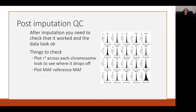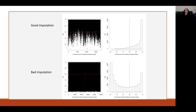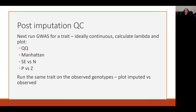Once imputation is done, it's a good idea to do some QC and check that it worked. You can look at the minor allele frequency compared to the reference and see how that looks, and also look at the R-squared across the chromosome. Here are some toy examples: a relatively good imputation where R-squared varies quite markedly across the genome but generally follows a fairly well-defined distribution, versus a deliberately bad imputation with a very different distribution. After the basic imputation, it's also a good idea to run a GWAS for a trait that is fairly well powered — ideally something continuous — look at the lambda, check your Manhattan and QQ plots, and then run the same trait using only the observed genotypes and compare the imputed versus observed variant results.